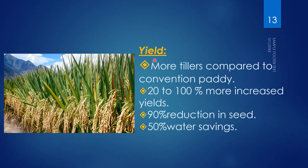The yield of the SRI method includes more tillers compared to conventional paddy, giving 20 to 100% increased yields. More tillers mean more panicles and more grains. There is a 90% reduction in seed requirement, as only 5 to 7 kg per hectare is needed. Water usage is also reduced by 50%, since only alternating drying and moist soil conditions are required.